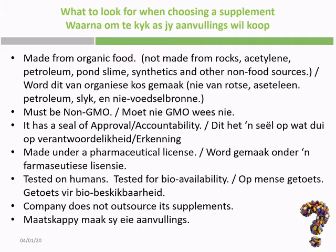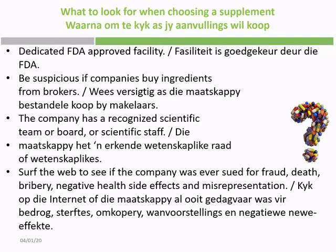A Canadian study on herbal products found that 60 percent of tested herbal products did not contain the herb mentioned on the label. Also make sure supplements are tested in humans and tested for bioavailability. Make sure the company doesn't outsource its supplements — verify that the company makes its own products and tests them. They should be made in an FDA-approved facility. A shocking example: aloe vera products tested in America contained no aloe vera, because companies had bought ingredients from brokers. Also check whether the company has been sued for fraud, misrepresentation, or negative health side effects.